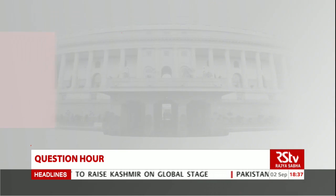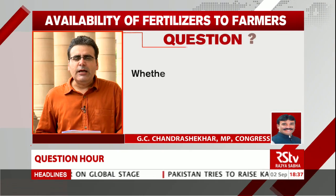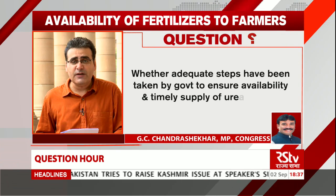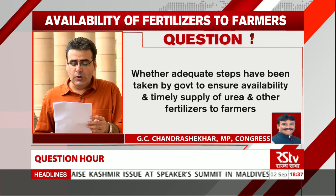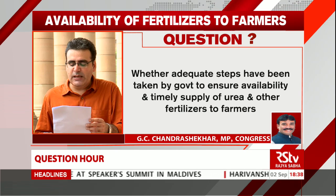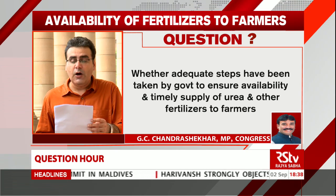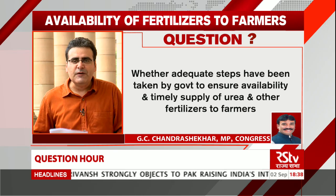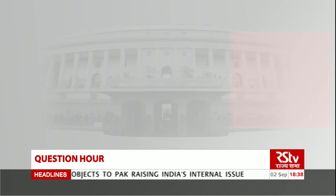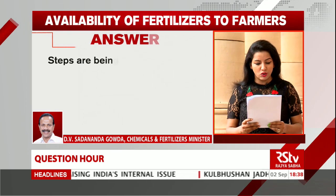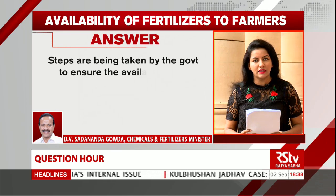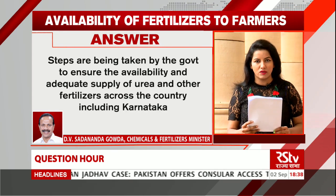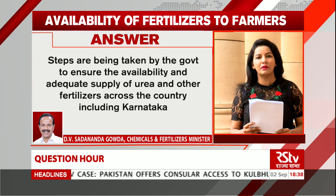The next question is by member GC Chandrasekhar, addressed to the Ministry of Chemicals and Fertilizers, wherein the member wants to know whether adequate steps have been taken to ensure the timely supply of urea and other fertilizers to farmers. The government has listed out the steps taken to ensure adequate fertilizer supply across the country.